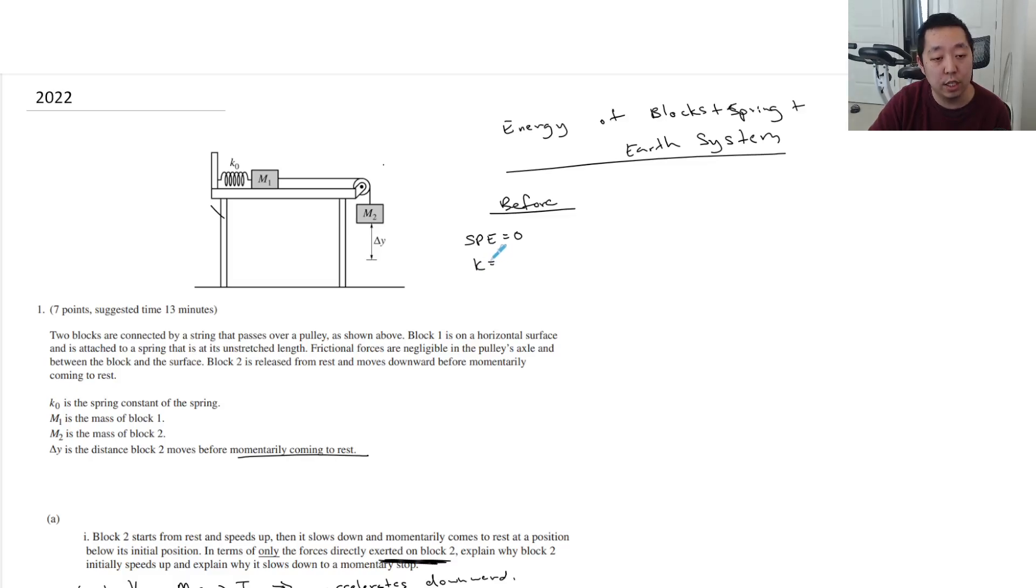The kinetic energy is also zero. And then if we set, because it's not moving yet, and then if we set this part to be H equals zero, then the gravitational potential energy is just equal to M2G delta Y.